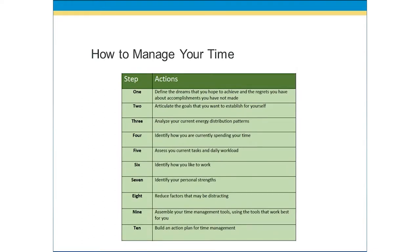You have to be able to look at and analyze your current energy distribution patterns — how do you spend your energy — which is step four: identifying how you currently spend your time and where you contribute or distribute that energy. In step five, you will assess your current tasks and your daily workload, understanding not only where you are currently spending your time, but what tasks you have to accomplish. This allows you to move into step six, where you identify how you like to work. We are much more effective doing the things we like to do in the ways we like to do them, which then allows you to move into step seven by identifying your personal strengths.